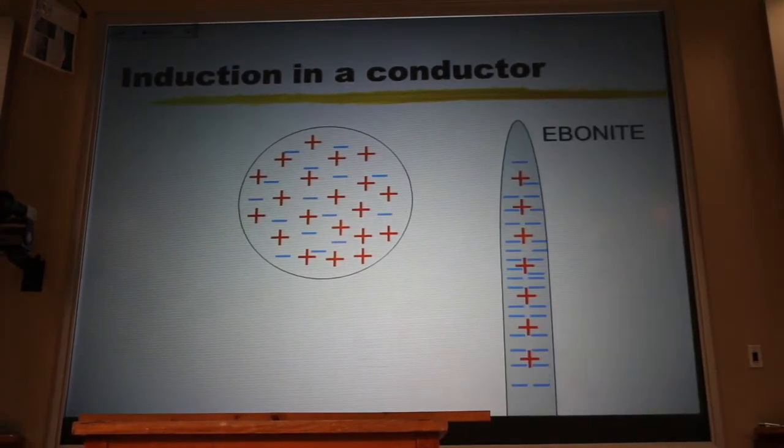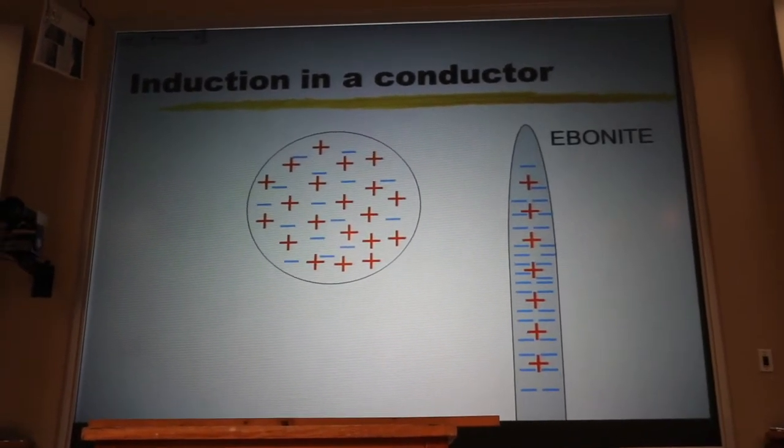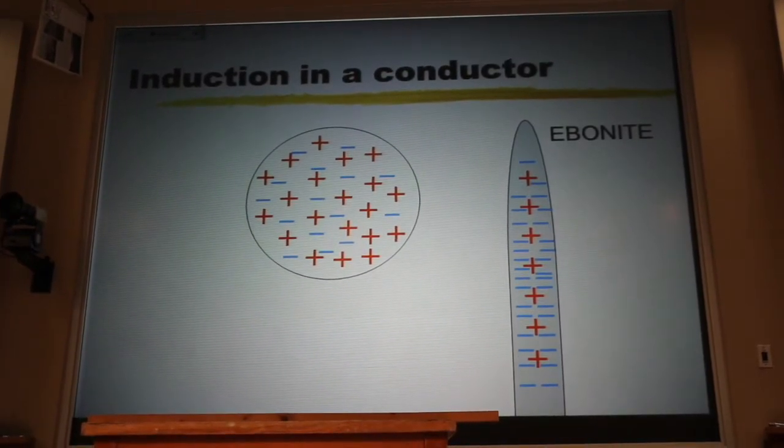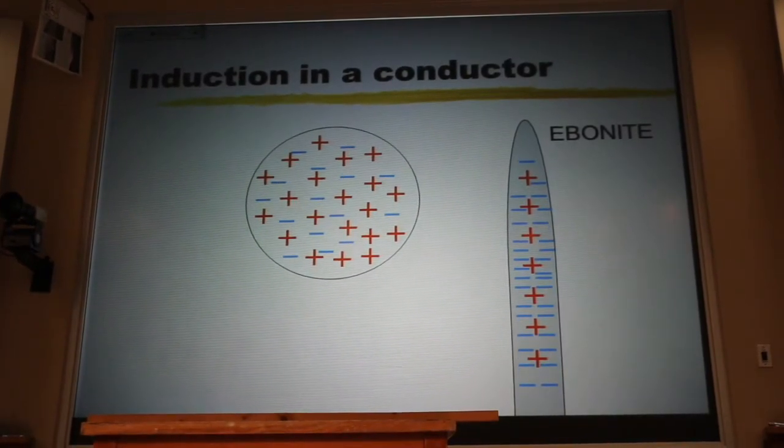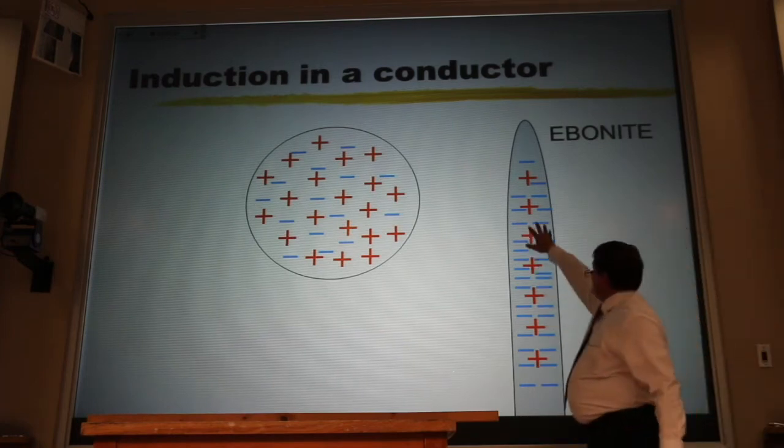Now, if I bring in my ebonite rod, ebonite is just a sophisticated word for rubber rod. That ebonite rod is negative, it's got too many electrons.